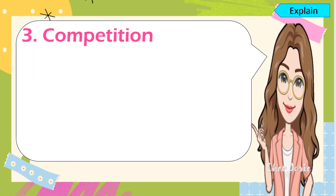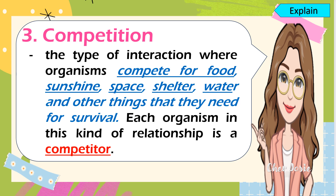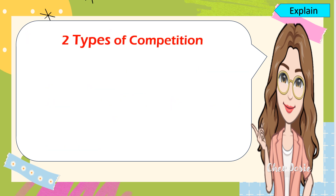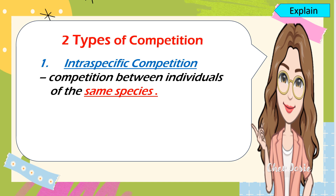The third harmful interaction of living things is what we call competition. When you say competition, it is a type of interaction where organisms compete for food, sunshine, space, shelter, water, and other things they need for survival. Each organism in this kind of relationship is called a competitor. There are two types of competition. The first one is intraspecific competition, where there is competition between the same species.